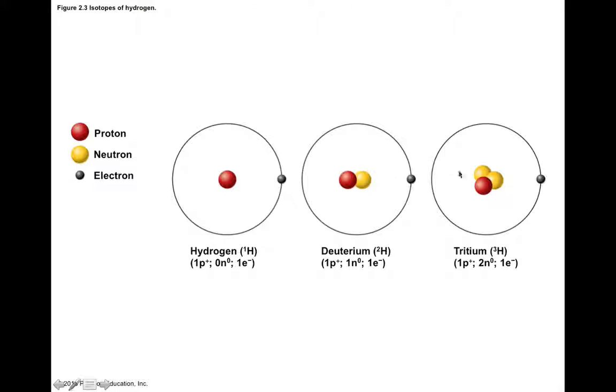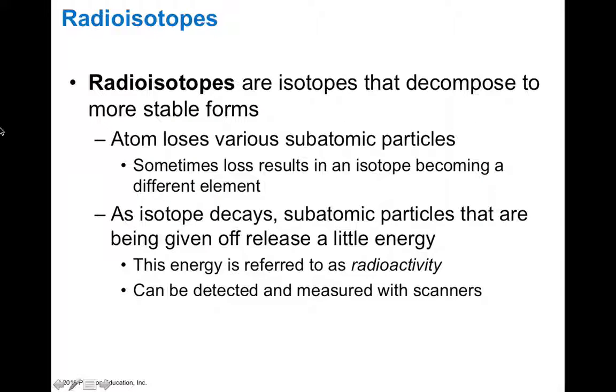This is showing an example of isotopes. Hydrogen in its more common form is one proton, one electron. Deuterium, which is heavy hydrogen, is one proton, one neutron, and one electron. This would have a mass number of two. And then tritium, which is one proton and two neutrons, would have a mass number of three because of its extra subatomic particles. What's interesting is that a lot of times isotopes will decompose into more stable forms. Some isotopes aren't as stable as other types of atoms or isotopic forms. As these atoms lose various particles from their nucleus or electrons, this can actually lead to a different element. As isotopes decay, subatomic particles that are given off release a little bit of energy. This is referred to as radioactivity and it can be detected with scanners.